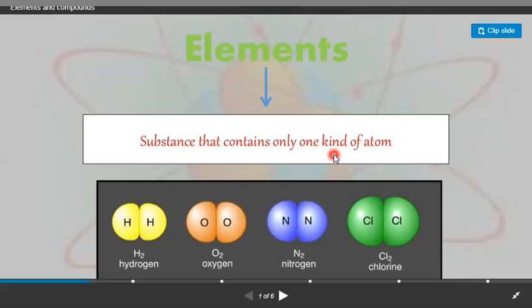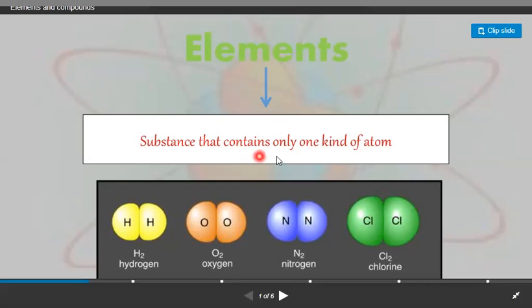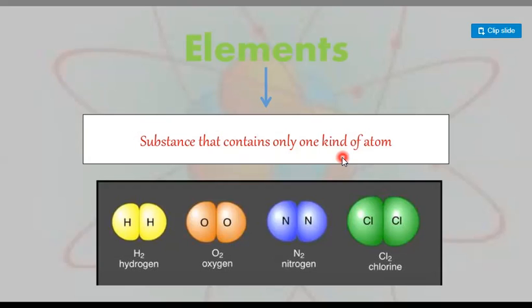I repeat the definition: an element is a pure substance which cannot be split up into other simpler substances by any ordinary physical or chemical process. A substance that contains only one kind of atom is called an element. For example, gold is an element and it can never be converted into any other simpler substance by any ordinary physical or chemical reaction.